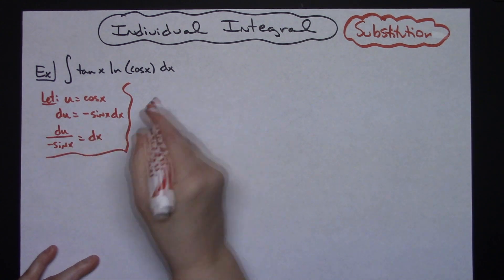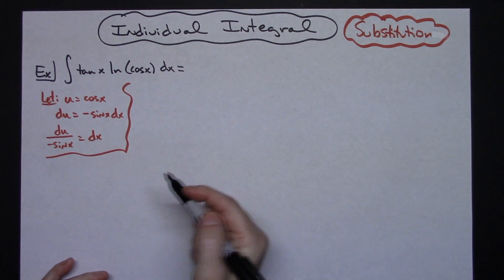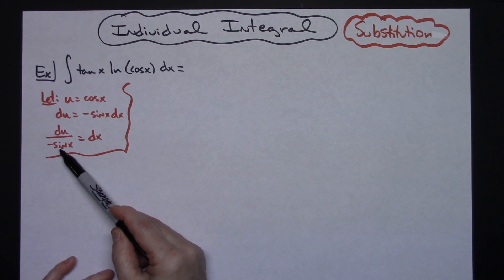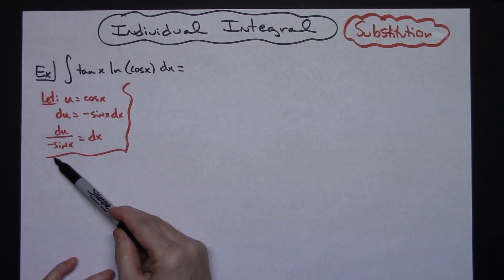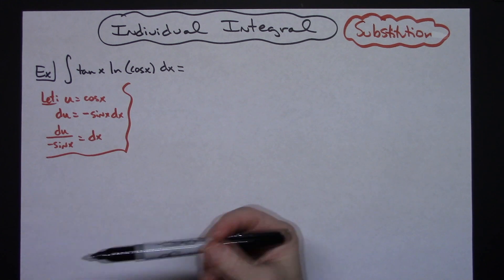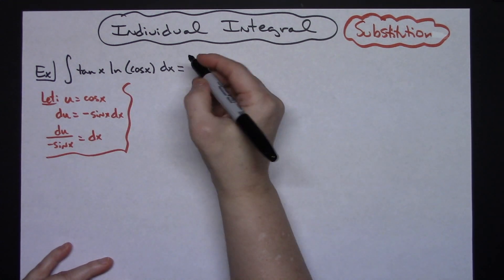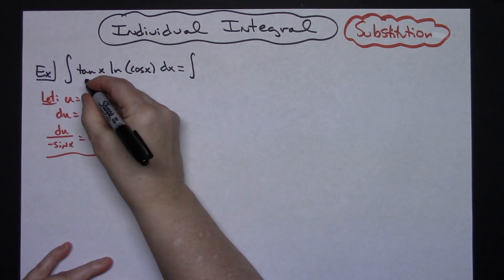Okay, I'm going to come up here to my original function and I'm going to start doing some substituting. Okay, now I see a tangent here and I see a sine here that's going to get substituted in for my dx. Alright, well clearly I'm not going to have anything to substitute there. So hopefully right off the bat you can just see, oh tangent, I can rewrite as sine over cosine and that's going to help tremendously. So that's what I'm going to do.